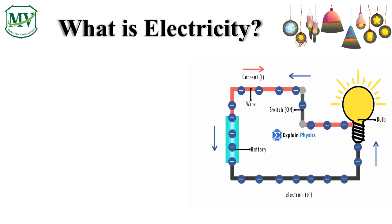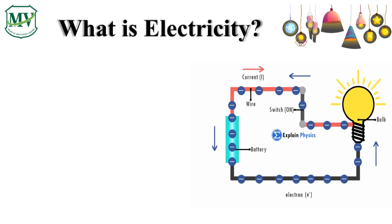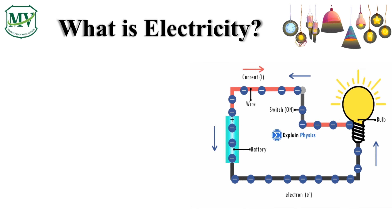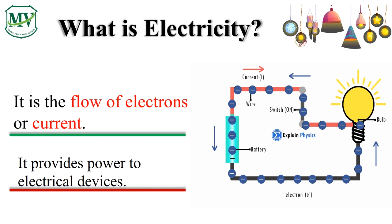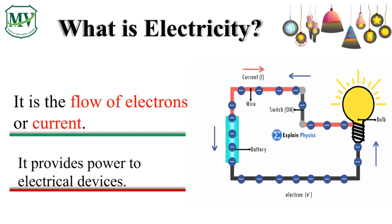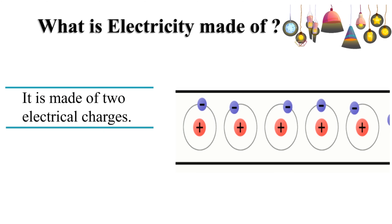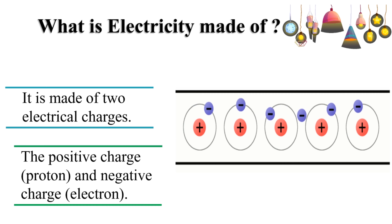So class, what is electricity? What did you observe from the video on the left side? Correct! Electricity is the flow of electrons or current. It provides power to electrical devices. Now, what is electricity made of? Electricity is made of two electrical charges: the positive charge or proton, and the negative charge or electron.